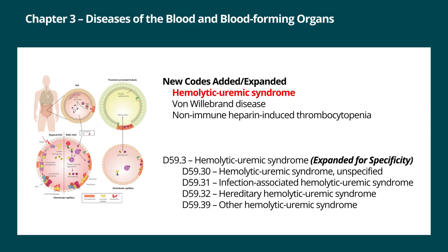Chapter three, diseases of the blood and blood forming organs. Three categories of codes were updated: hemolytic uremic syndrome, von Willebrand's disease, and non-immune heparin induced thrombocytopenia. Hemolytic uremic syndrome has been expanded into four codes: D59.30 for unspecified hemolytic uremic syndrome, D59.31 for infection associated hemolytic uremic syndrome, D59.32 for hereditary hemolytic uremic syndrome, and D59.39 for other specified hemolytic uremic syndrome.